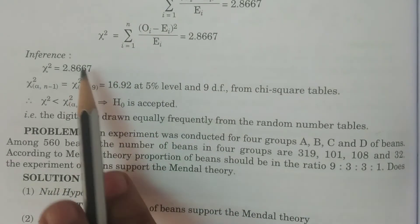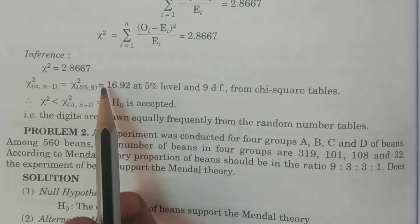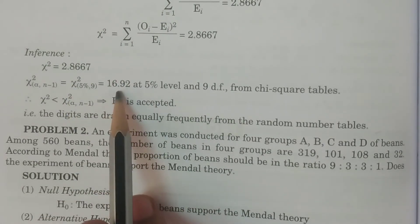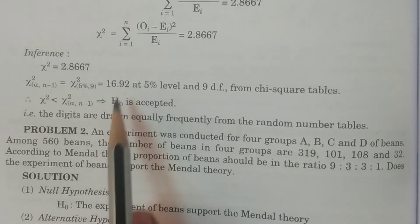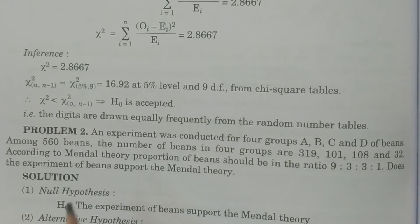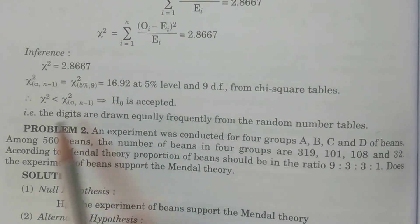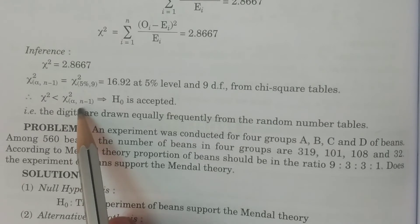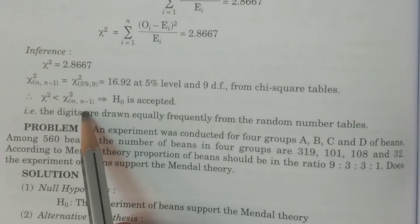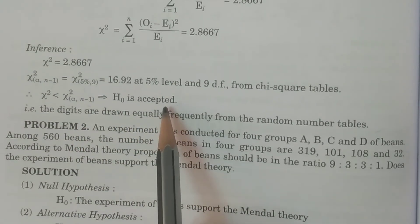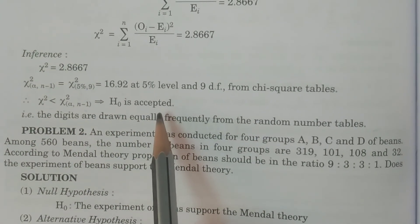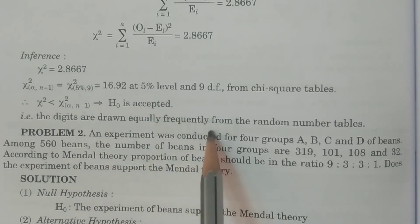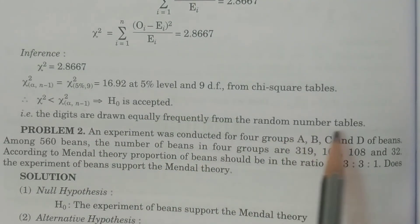Therefore, comparing the calculated value and the tabulated value: 2.8667 is less than 16.92. Since chi-square calculated is less than chi-square tabulated at 5%, 9 degrees of freedom, H naught is accepted. Therefore, the digits are drawn equally frequently from the random number tables.